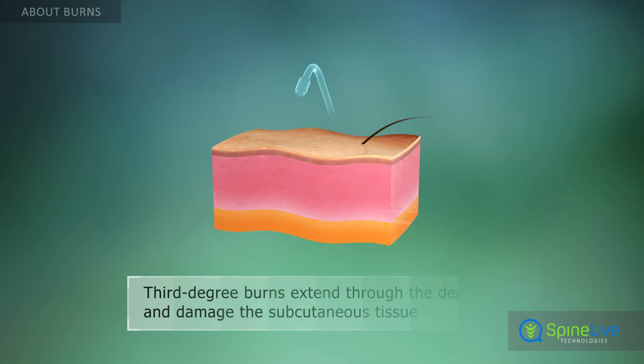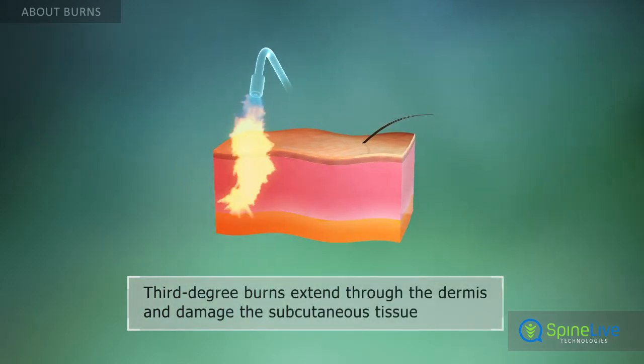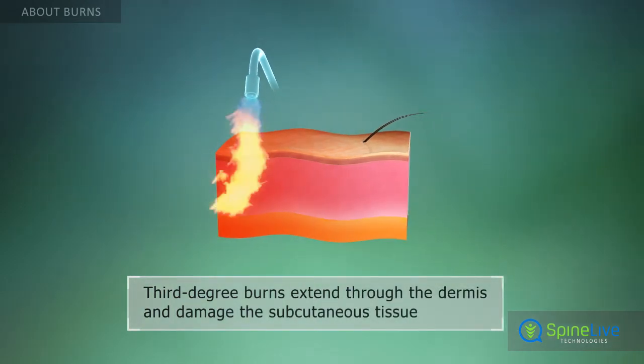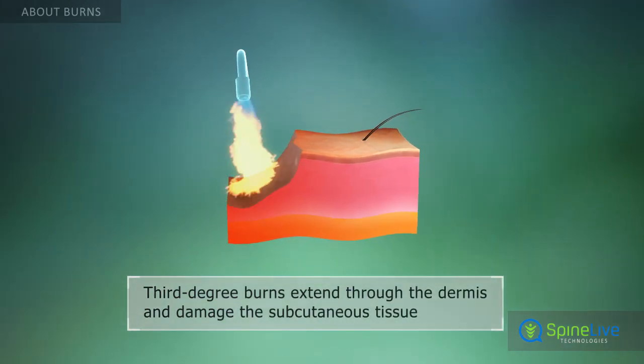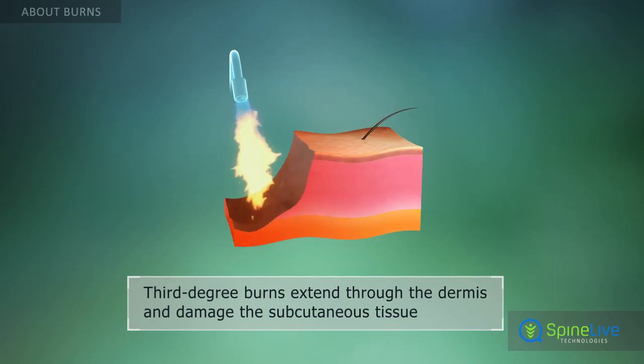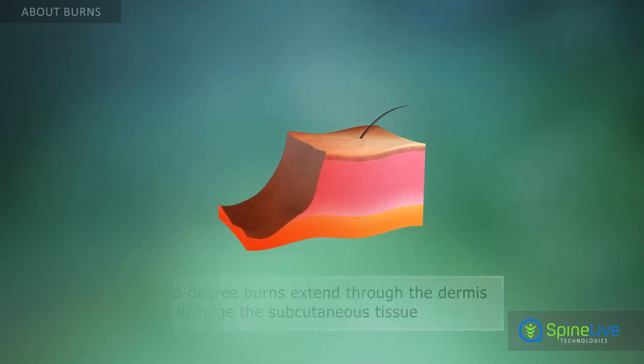A third degree, or full thickness burn, occurs when all layers of the skin are damaged. The burn tissue is often black, brown, or gray in color.